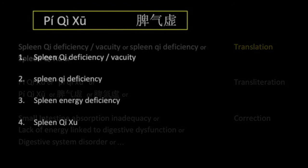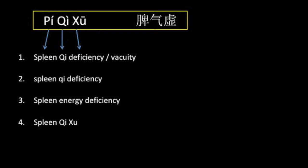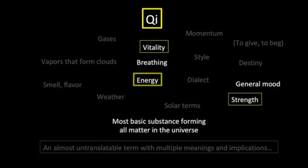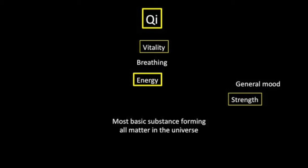The Chinese term for this syndrome is pi qi shu. Pi means spleen, qi is usually left as qi, and shu translates as deficiency or vacuity. The term most commonly used is deficiency, and I don't believe there is much argument about its intuitive meaning or translation. The word qi has many meanings, but it has now entered English vocabulary as a form of energy, so equating fatigue to qi deficiency doesn't come as a surprise.